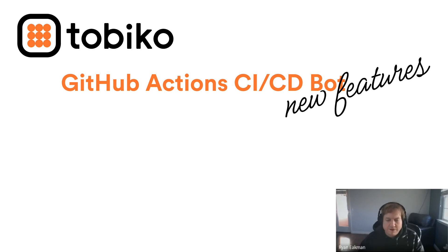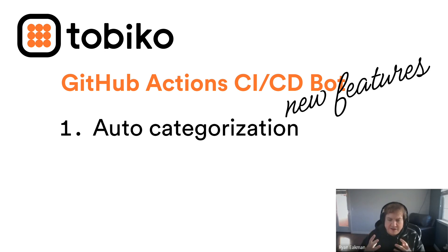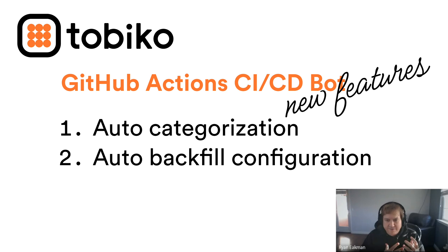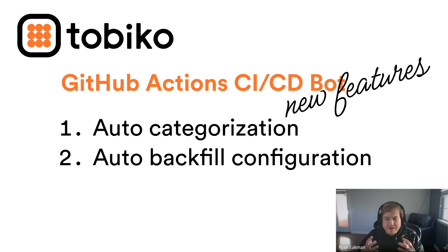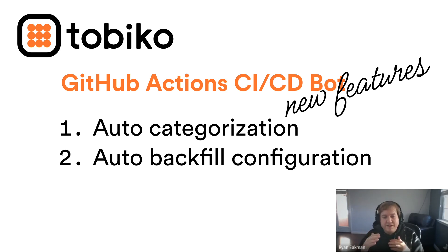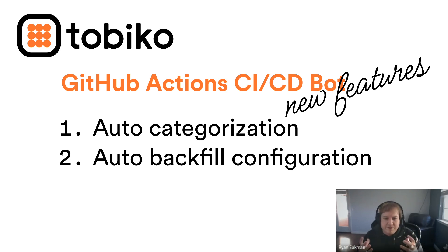Throughout the demo, you're going to see two new features being used. One is auto-categorization behavior, and the other is automatic backfill configuration. With these changes, you can have the bot automatically detect when a change is in a PR, categorize that change as breaking or non-breaking using SQL Mesh's column-level lineage, and then automatically backfill tables that were affected based on a date range you provide — like the last day, last week, or last month — to give you something you could preview and validate before backfilling the whole thing and going to production.